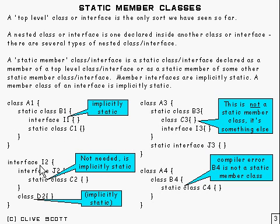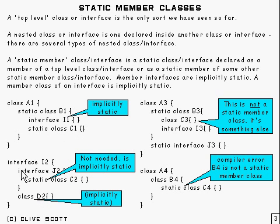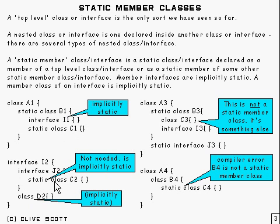Here's another example, this time done with an interface. If you put a class into an interface, it's implicitly static and so it counts as a static member class — you don't have to put the word 'static' in front. You can also have an interface inside of an interface. And inside of that you can put a class, and because it's inside of an interface it's implicitly static, so you don't need to put 'static' in front. You can if you want to though — it doesn't make any difference.